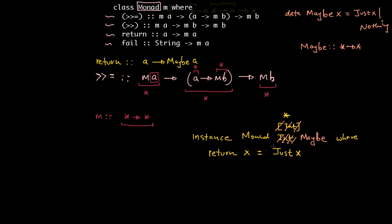So this is one example of how to create an instance of the Monad type class. And let's complete one more method. This operator here is also called the bind method. So to implement the bind method...